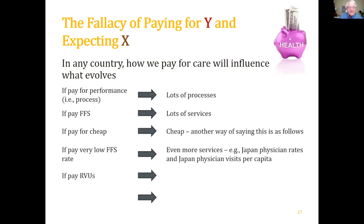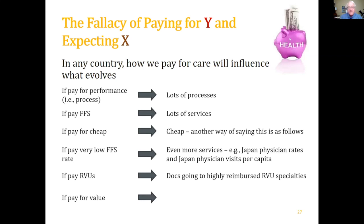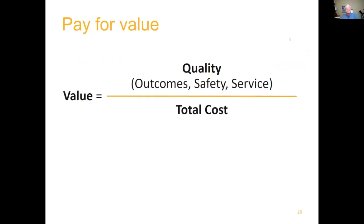Relative value units — used by Medicare — assign higher values to procedures, surgery, and radiology. So those specialties get paid more, and physicians go into those fields. If you pay for value, that might be the best chance of actually getting value. Value equals patient outcomes, safe environment, and service, over total cost per patient over some period of time.